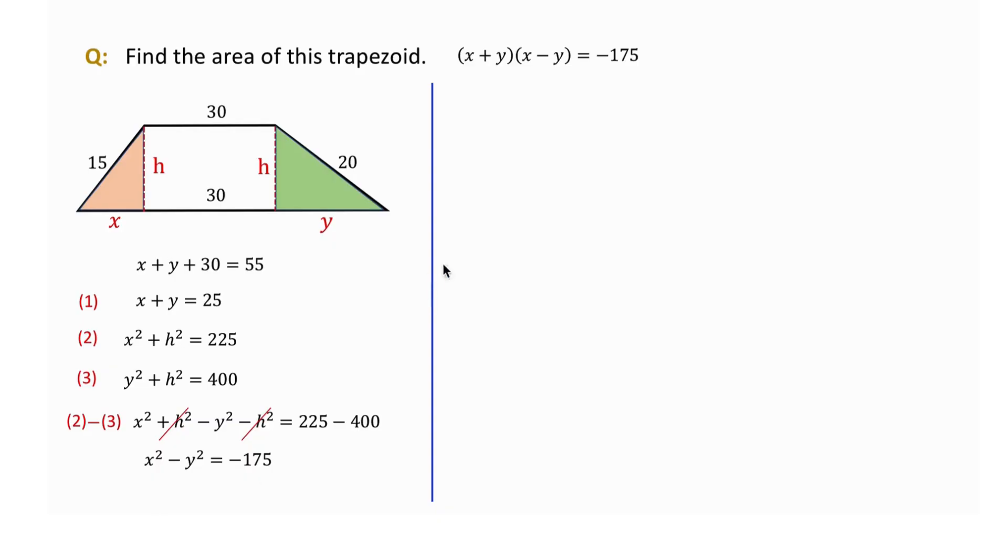We factor this as (x plus y) times (x minus y) equals negative 175. Since we already know that x plus y is 25, we substitute it into the equation. Dividing both sides by 25, we get x minus y equals negative 7.